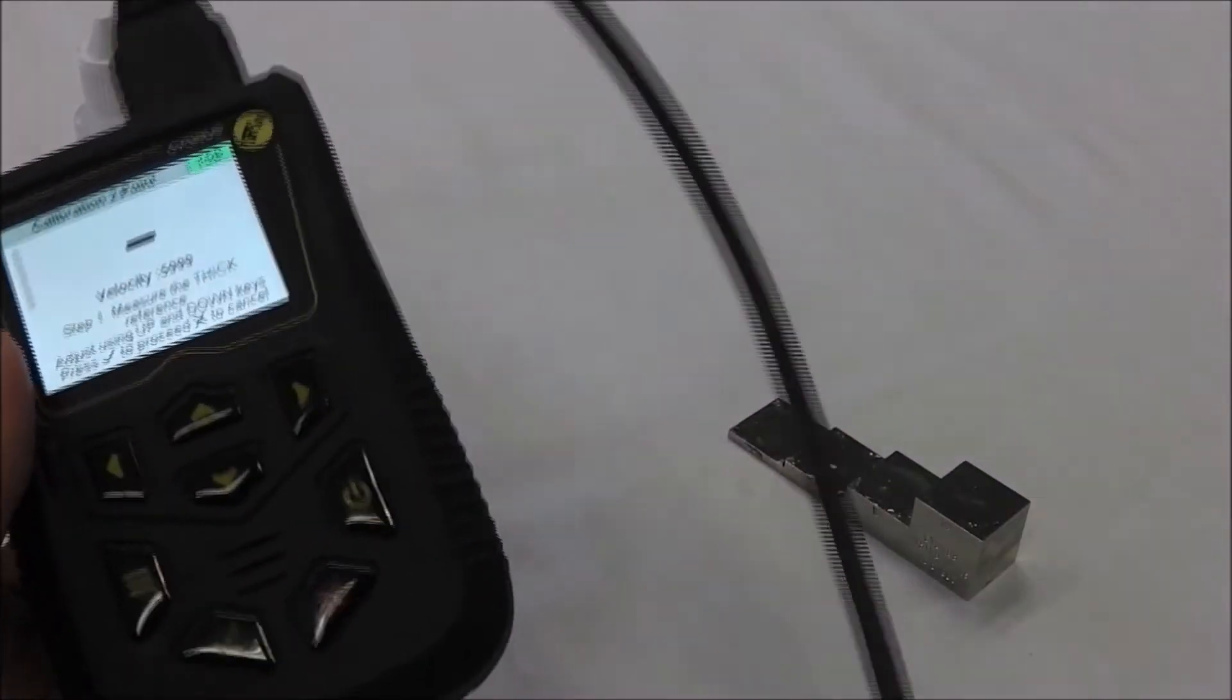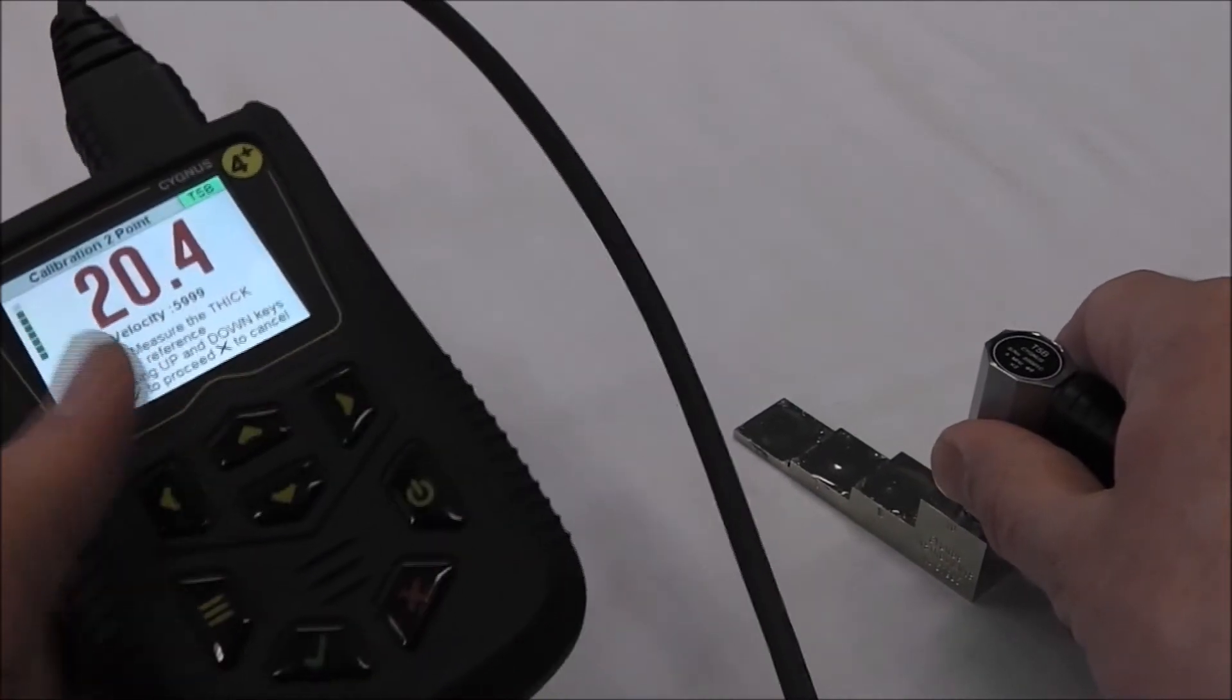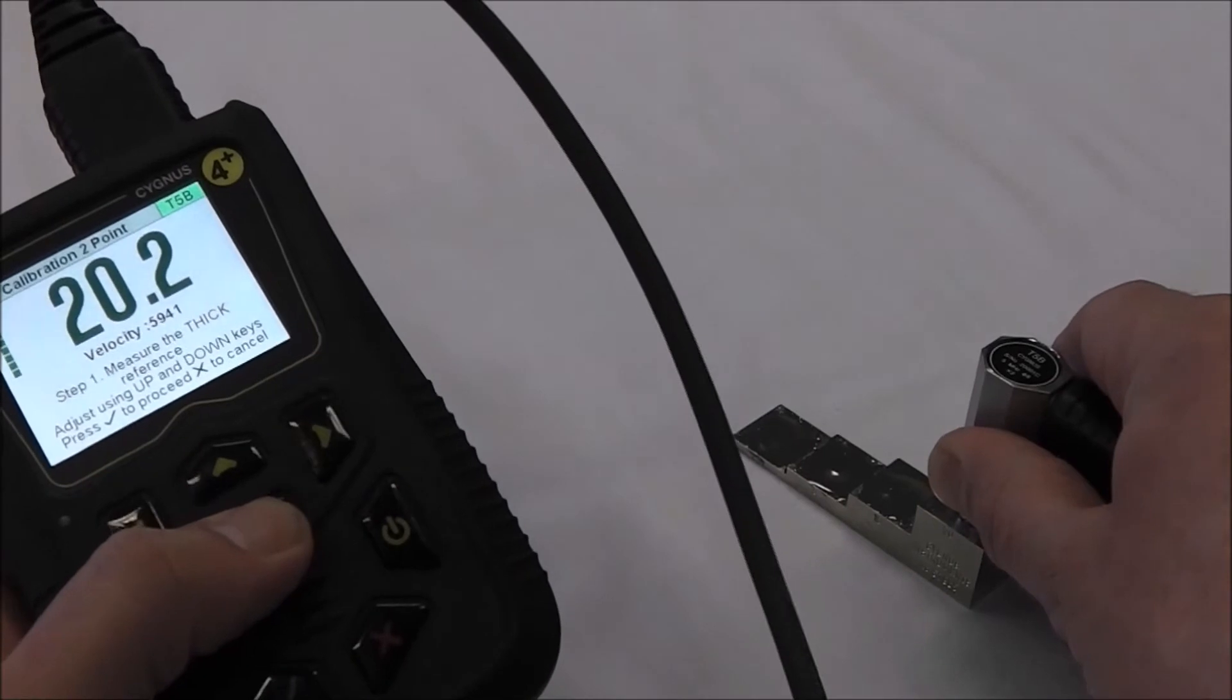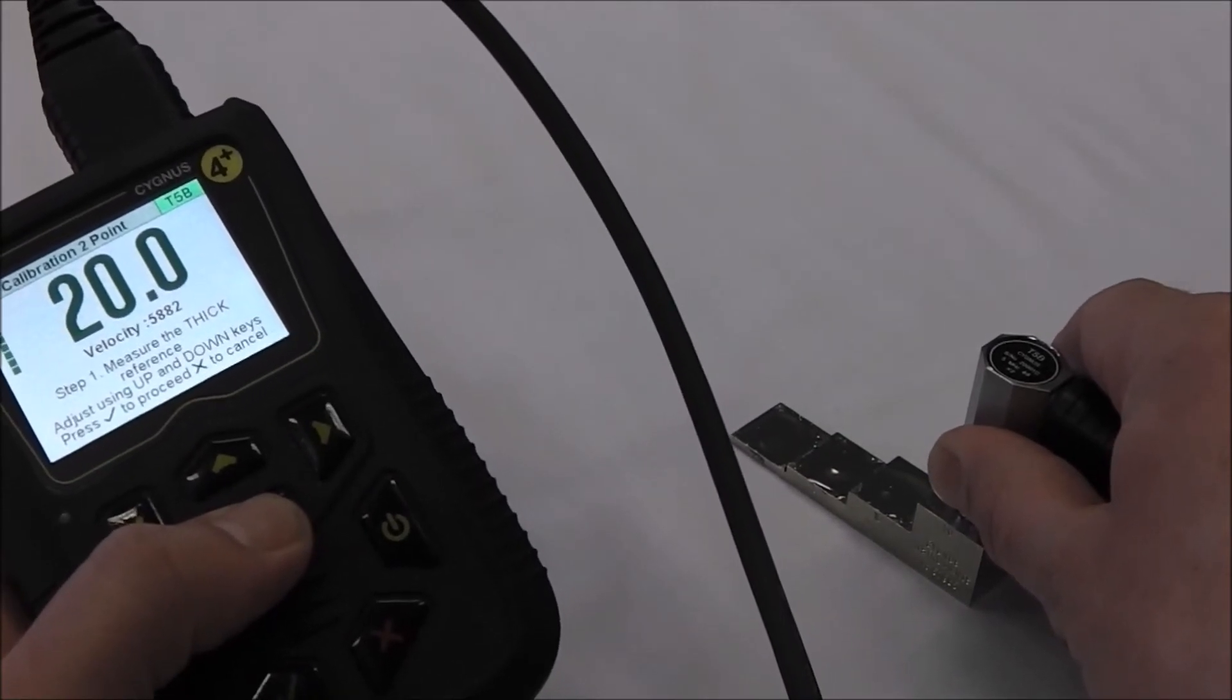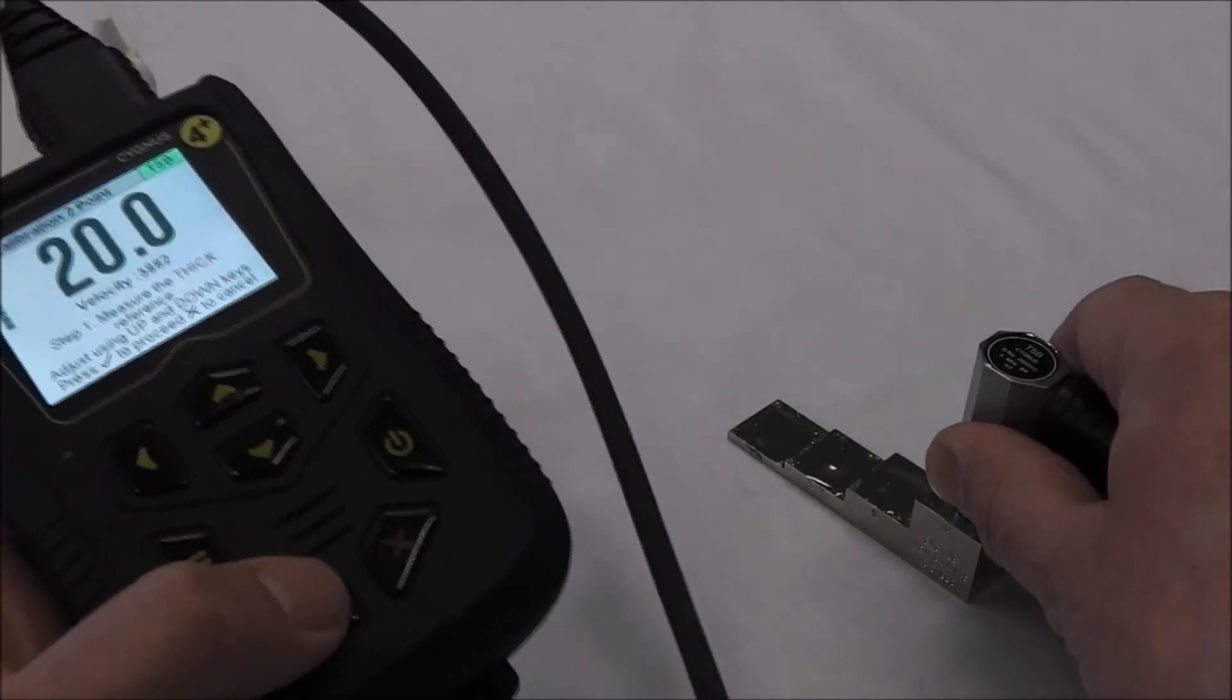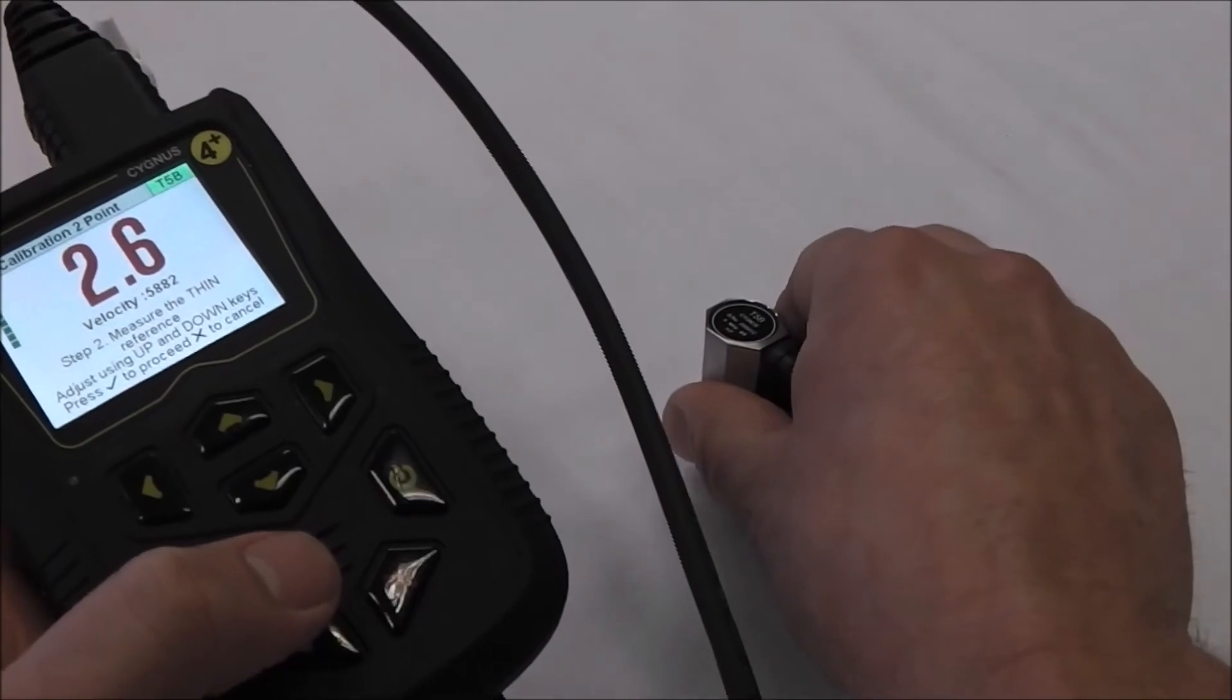On the calibration two-point screen, follow the measure thick reference instruction by placing your probe on the 20mm step with a little couplant and use the up and down arrows to change the reading to the correct thickness value. Press the green tick to store and measure the thin reference will now appear.